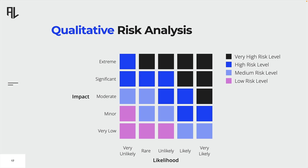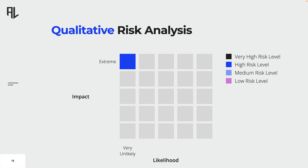Let's try to use this matrix to determine the level of risk for the volcano eruption on Hawaii. The likelihood of such a natural hazard is rather unlikely, whereas the impact has extreme consequences for the organization. The corresponding level of risk is high. Please note that this classification is highly subjective, as no further guidance on how to determine the probability and impact of a risk is provided. Organizations should establish guidelines that support employees with risk analysis to make it less subjective. However, this methodology is a great starting point.